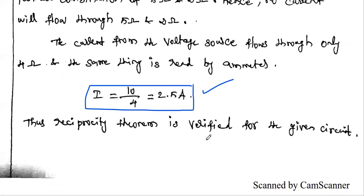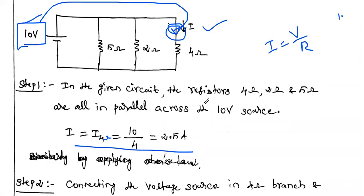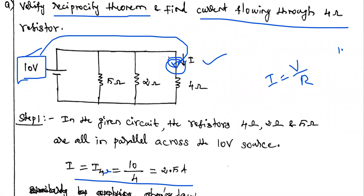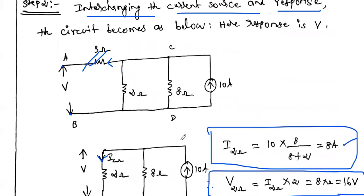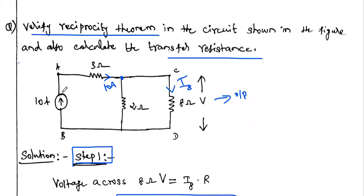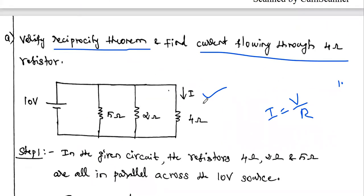The ratio V by I is the same for the first step as well as the second step, so the reciprocity theorem is verified. The current flowing through the 4 ohm resistor is 2.5 amps. This is one type of problem. In the previous video, we solved a problem where the input source was a current source and the output was a voltage across some resistance. But in this second problem, the input is a voltage source and the response is the current flowing through a particular resistor — so two types of problems have been solved.